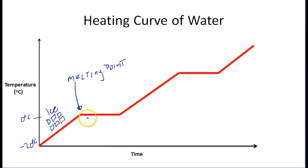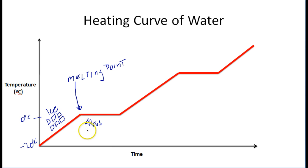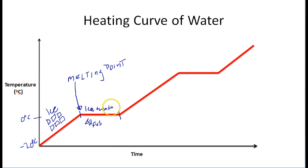What's happening here is the heat of fusion. In this segment on the graph, the ice is melting. All the energy being pumped into this ice is not going toward increasing the ice's temperature. Instead, all that energy is going into the phase change — converting the ice into water. So between these two points you have a mixture of ice and water.